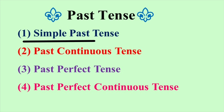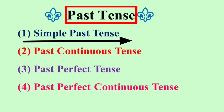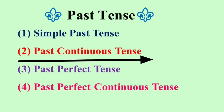Past Tense — 1. Past Indefinite Tense. 2. Past Continuous Tense. 3. Progressive Tense (Past Progressive Tense).